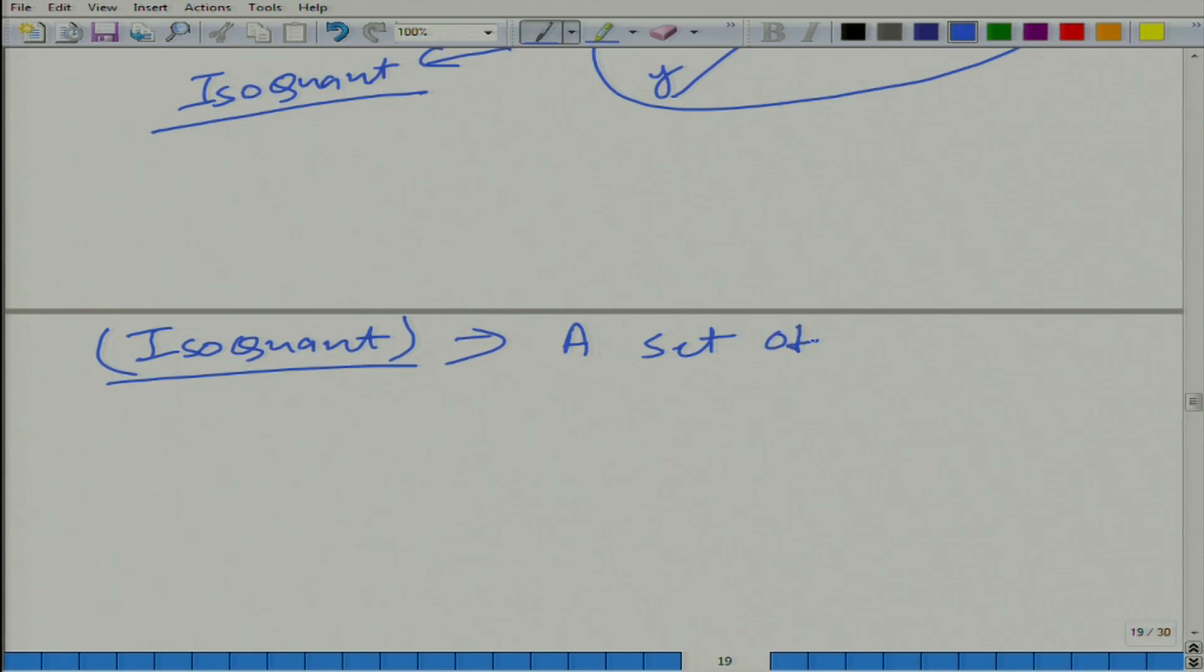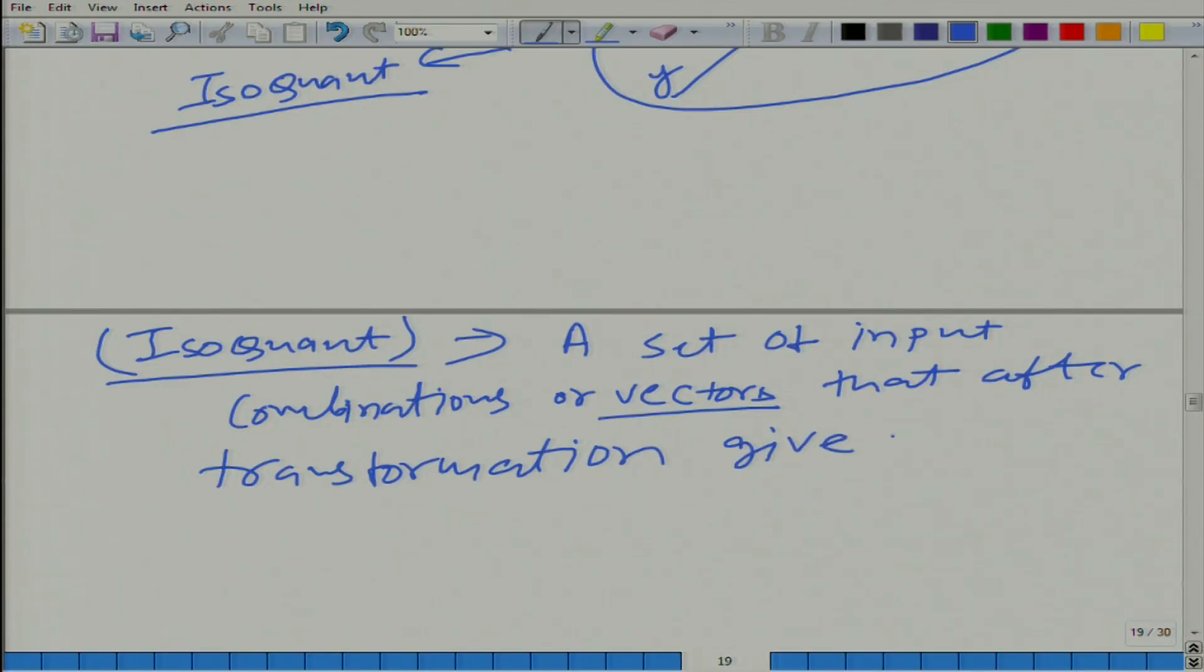What we have is basically a set of input combinations or vectors. Why am I saying vectors? Because vectors is well suited to represent the input combination that, after transformation, give out the same amount of output. Let us say, for example, q naught for a particular level.